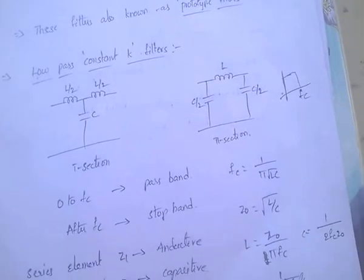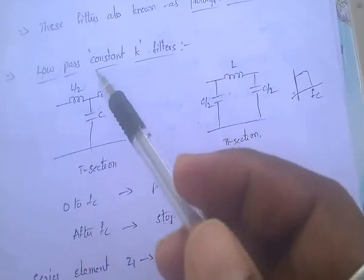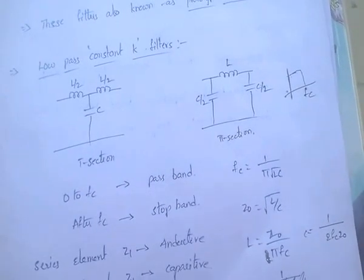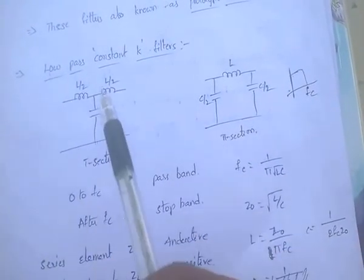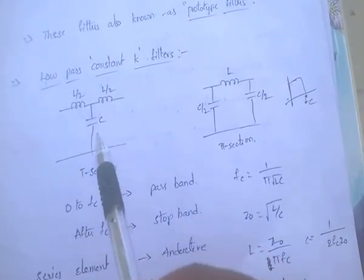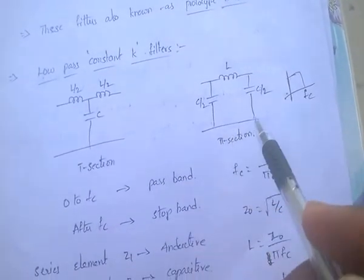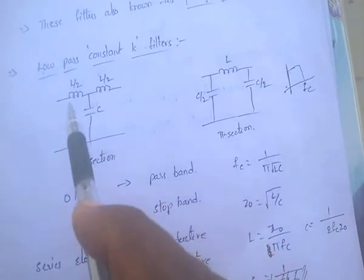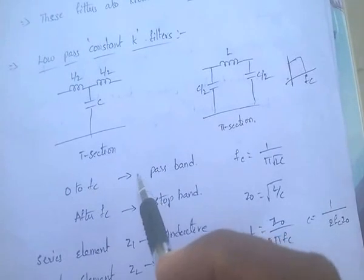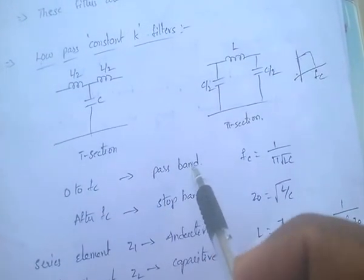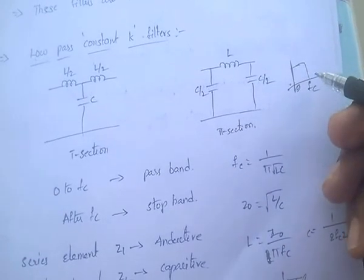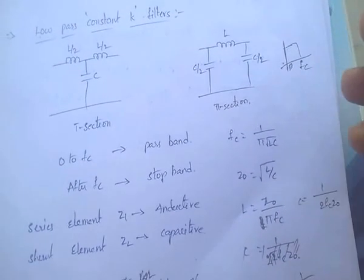Coming to low pass filter: a low pass filter allows only low frequencies and attenuates high frequencies. It is available in T-section type and pi-section type configurations. From 0 to FC (cutoff frequency), it is a pass band — it allows all frequencies. After FC, it is a stop band — it does not allow any frequencies.